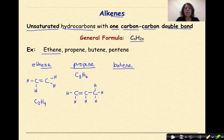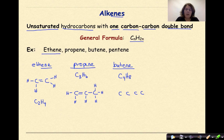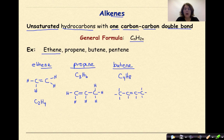Let's go on to butene. The molecular formula for butene is C4H8. We put down four carbons, and put the double bond between one pair, with single bonds between the rest. In this course we're only going to have one double bond. Every carbon must have its four bonds — not five, not three, but four — and we fill in the hydrogens accordingly.